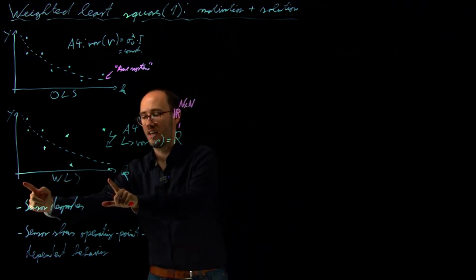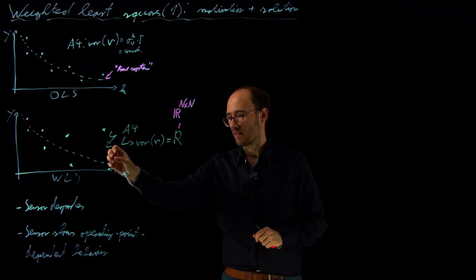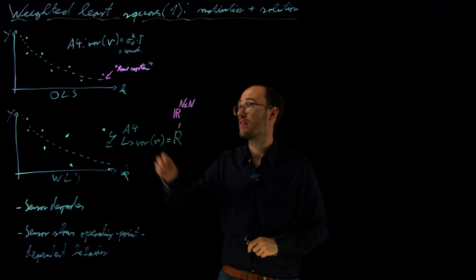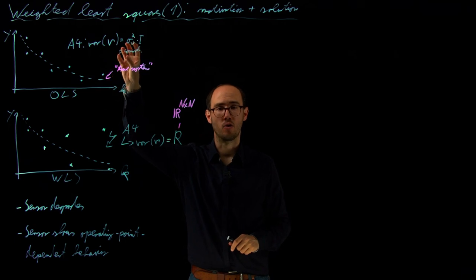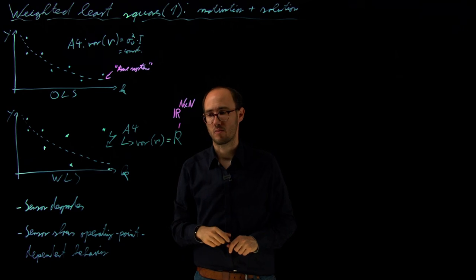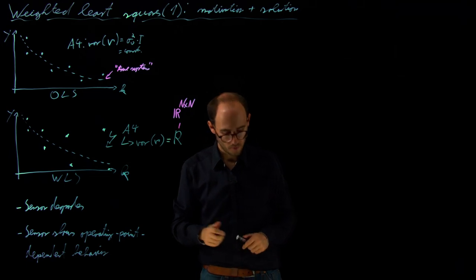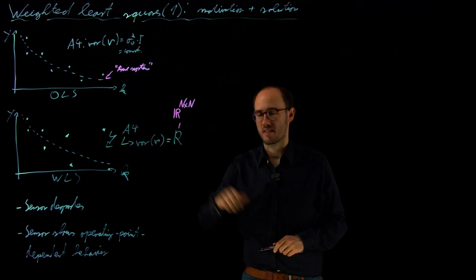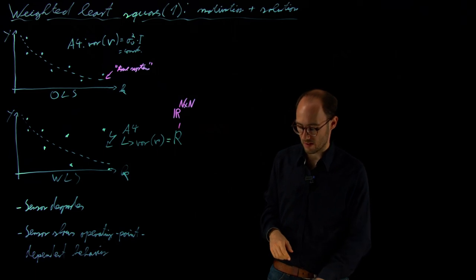If these are capital N measurement points, we have basically per sample variance information. Right here, we have the assumption that all measurement points are subject to the same noise characteristics, and here we have a per sample noise characteristic, which is represented by this covariance matrix R.